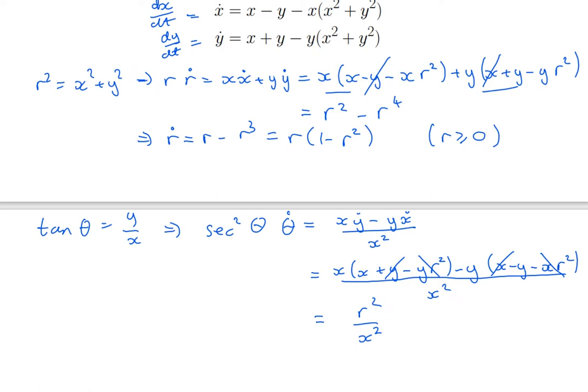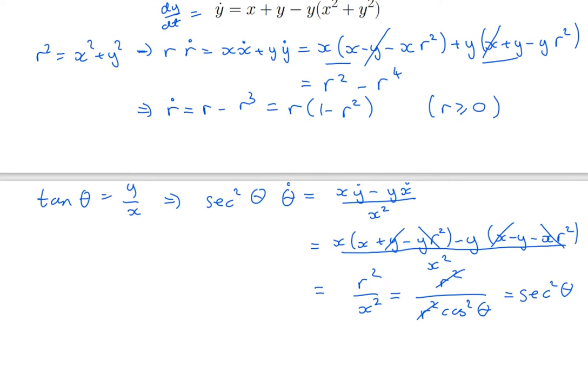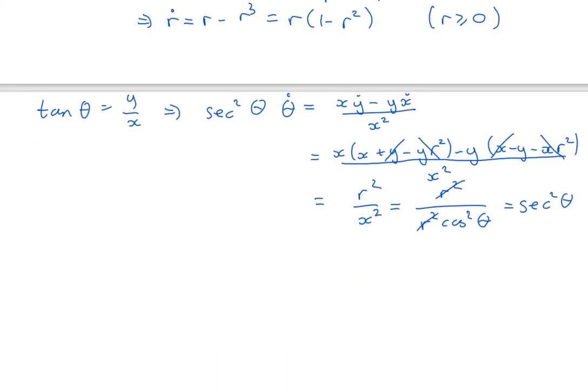I want to write everything in terms of r and theta. So I use x equals r cos theta. Now the r squareds cancel and I get 1 over cos squared, which is equal to sec squared theta. sec squared theta times theta dot equals sec squared theta. So I get theta dot equals 1.